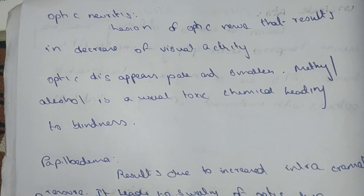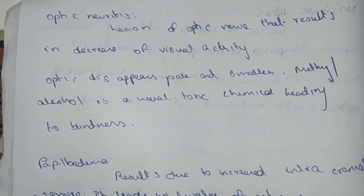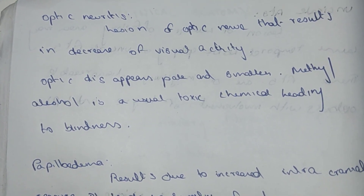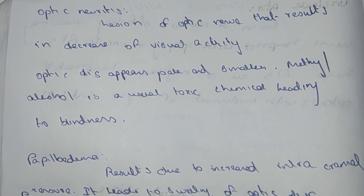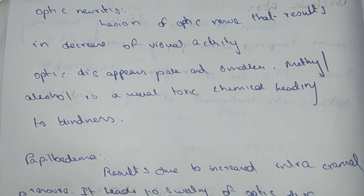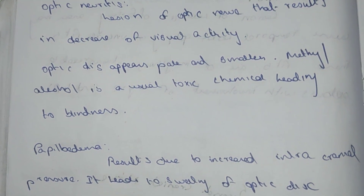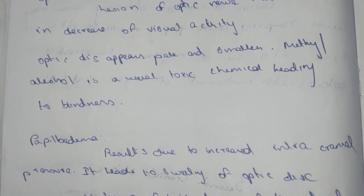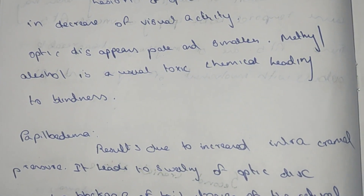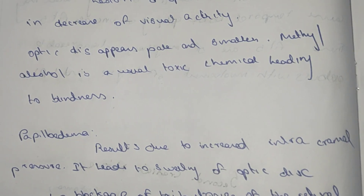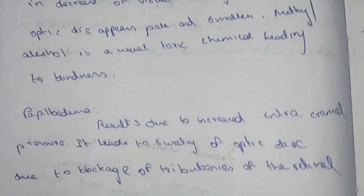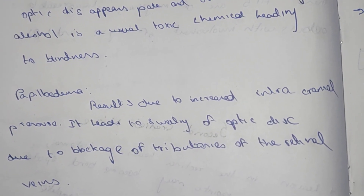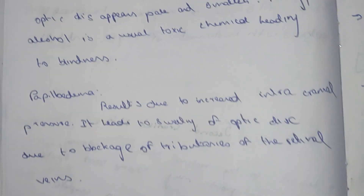Optic neuritis is a lesion present in the optic nerve that results in decreased visual acuity. The optic nerve appears pale and smaller. When methyl alcohol comes in contact with the eye it leads to blindness.